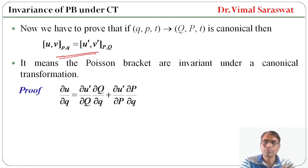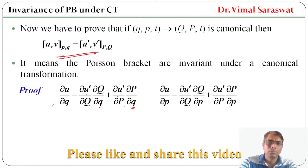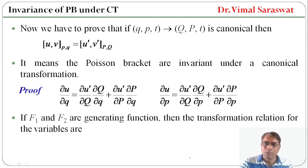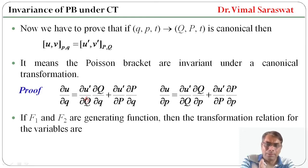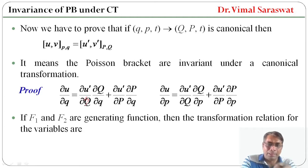We have to prove this identity. Now, del u / del q equals del u_dash / del Q into del Q / del q plus del u_dash / del P into del P / del q. And del u / del P is similarly defined. If F1 and F2 are generating functions, then the transformation relations for the variables are — now what is a generating function, what are F1 and F2, this we have already discussed in our previous lecture and the link is given in description box.